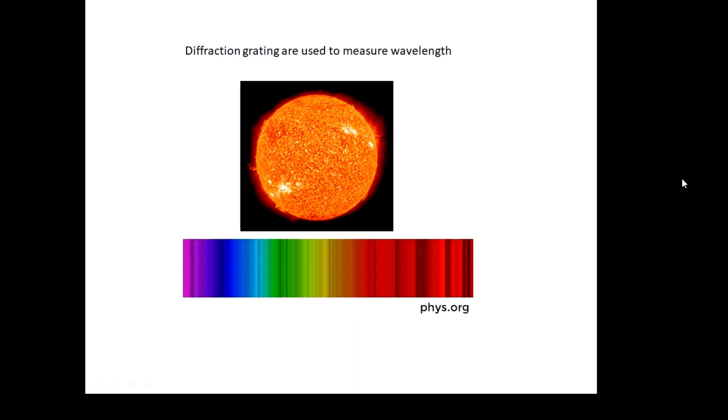to measure wavelength. A picture of the Sun there, because it's amazing how much we know about stars. We know how far away they are, what they're made of, how old they are, how hot they are. So much we know about stars is by looking at the light coming from stars and measuring the wavelengths, and invariably we use a diffraction grating to do that.